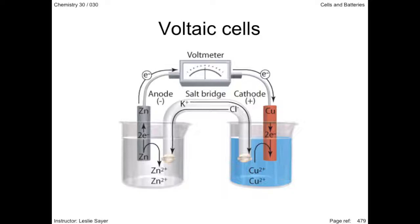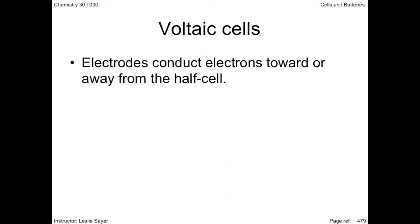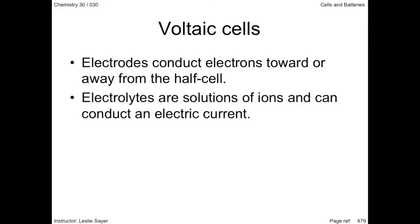I'll return to the details of this illustration in a moment. Each electrode is in a solution of its own ions, so that one doesn't react with the other. A solution of ions is called an electrolyte, and permits the movement of electrons.